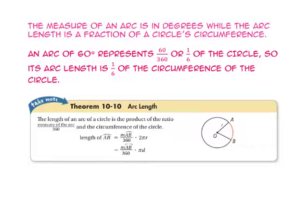We'll use theorem 10-10 to help us find the length of an arc. The length of an arc of a circle is the product of the ratio of the arc measure to the measure of the whole circle times the circumference of the circle.